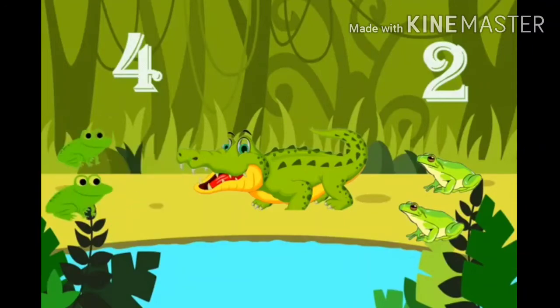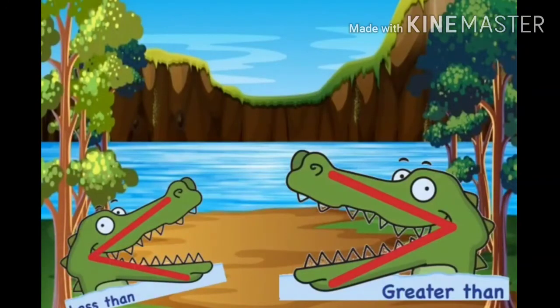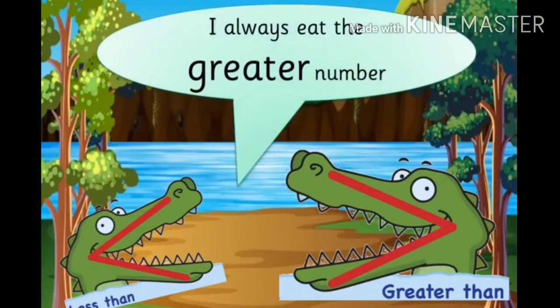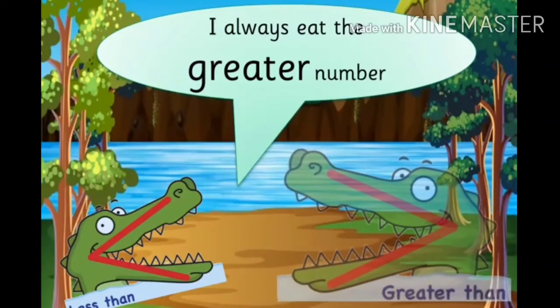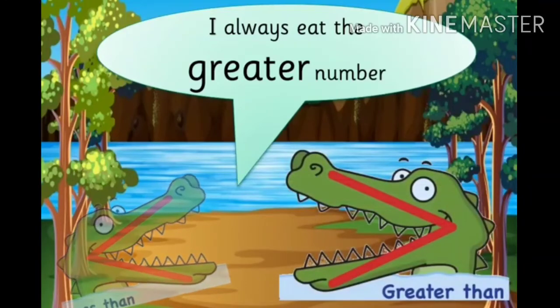I will eat four frogs. You know why? Because I always eat bigger number. I always eat greater number. And I always open my mouth towards the greater number. And this sign is the greater than. And this sign is the less than.